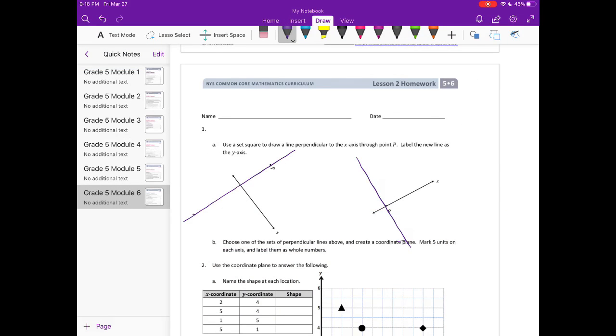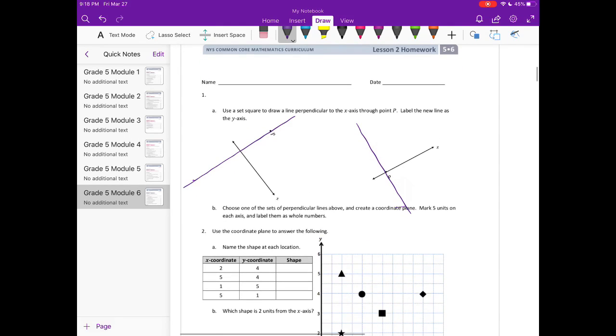Module 6 Lesson 2 homework, number one: use a set square to draw a line perpendicular to the x-axis through point P. Label the new line as the y-axis. So I went ahead and drew them on here. You just want to make sure that your line that you draw is perpendicular. You might not have a set square at home.